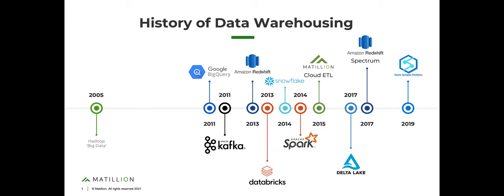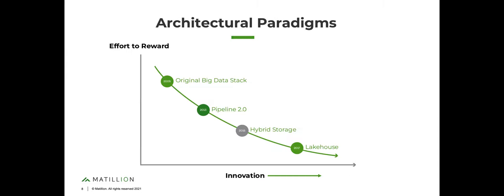There's been a tremendous amount of innovation happening in the space today, which is great news for operators and designers, especially from an architecture perspective. Looking at the major architectural paradigms over the last 15 to 20 years, the effort-to-reward ratio has dropped dramatically as innovation has increased. Let's walk through each one and talk about why the lake house has come about and what problem it's trying to address.